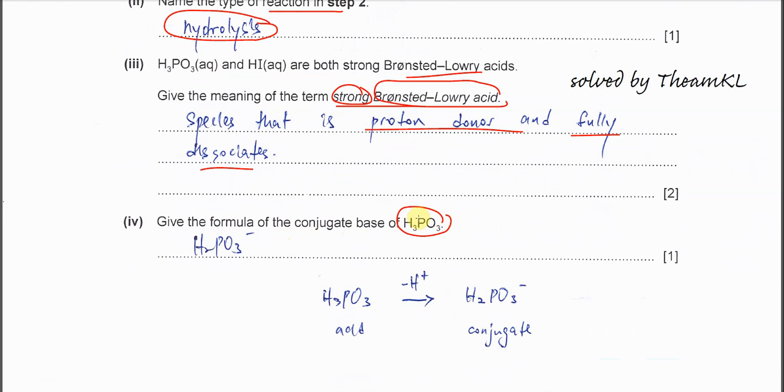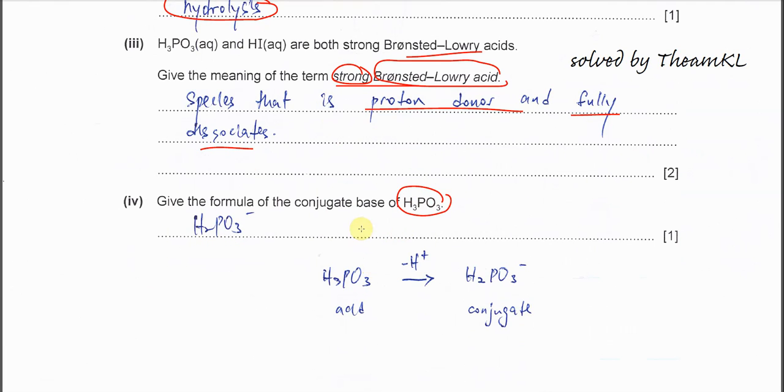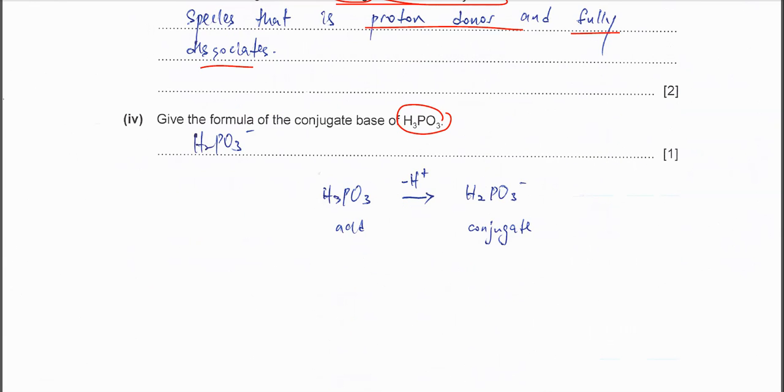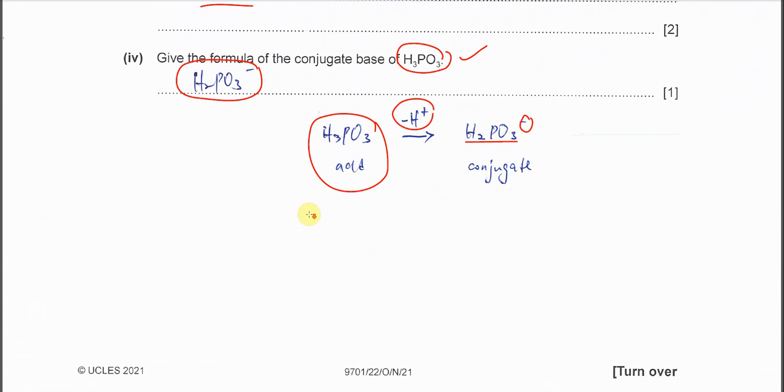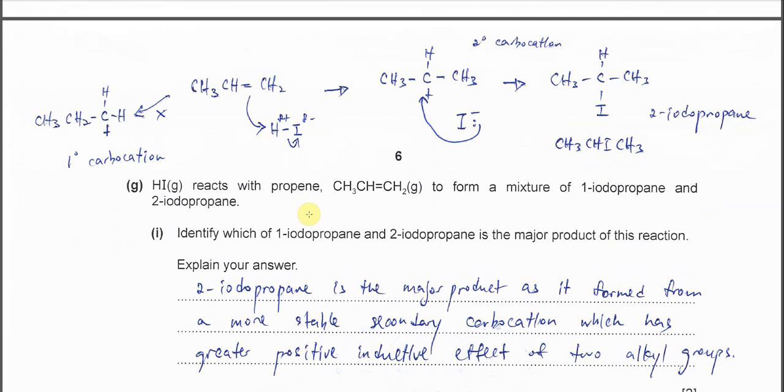Give the formula of the conjugate base of H3PO3. You need to know if this formula given is the H3PO3 acid, the conjugate base of this acid. H3PO3 acid means it must donate proton. After it donates a proton or releases a proton, it will become H2PO3 negative. This is the conjugate base of the acid. Your answer must be H2PO3 negative.